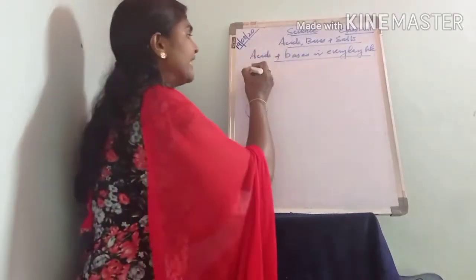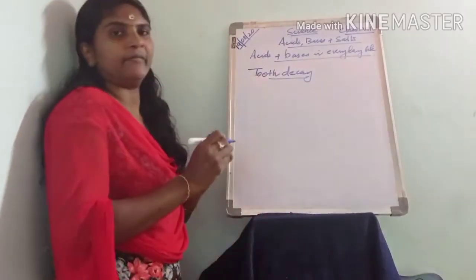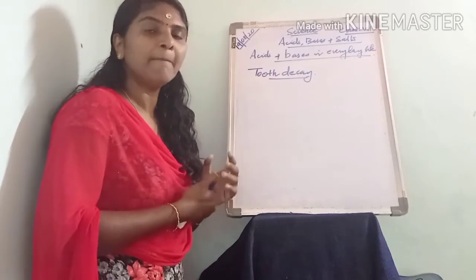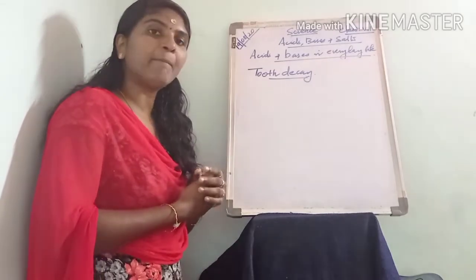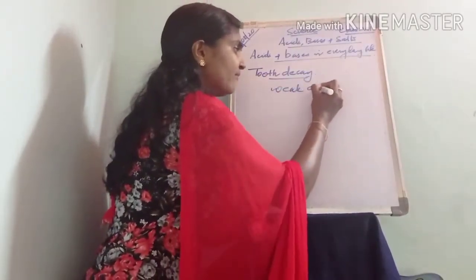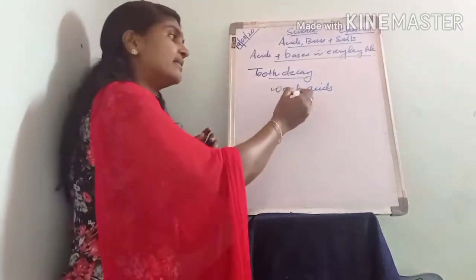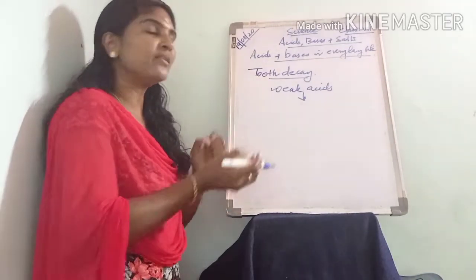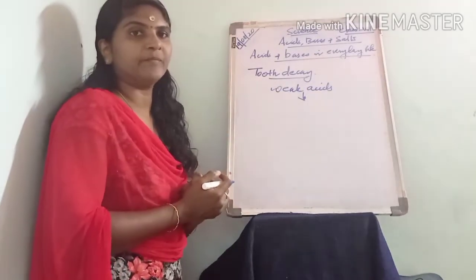First, we can see tooth decay. After taking food, if you are not properly cleaning your mouth, the food particles remain in the mouth, and they often contain sugar. The bacteria present in the mouth feed on this sugar and produce weak acids. If you do not keep your teeth clean, the acid produced by these bacteria can damage your teeth and gums, and can also make cavities on the tooth.